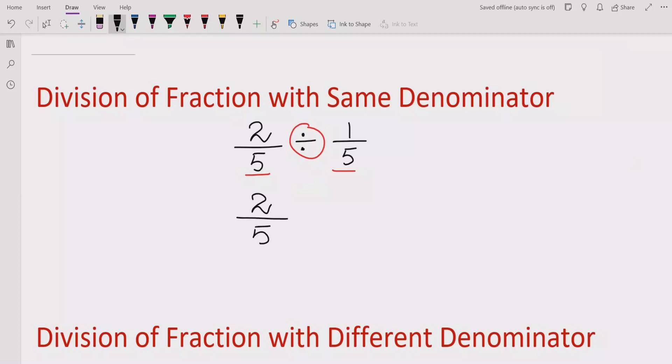So here 2 upon 5. If we change the sign division with multiplication, we have to change this sign to multiplication. So here we have to reciprocal the second fraction. Here is 1 upon 5. So now we will write 5 upon 1. So this is the major step we have to remember.